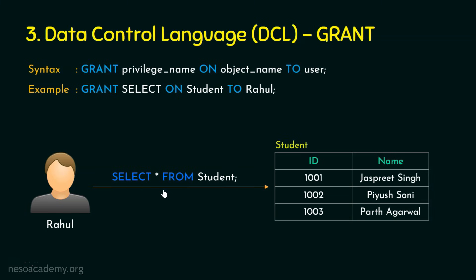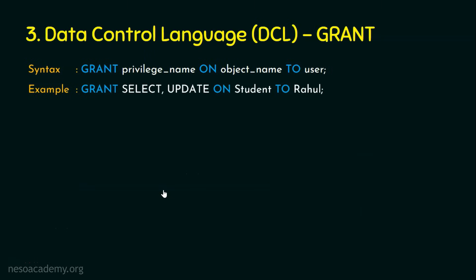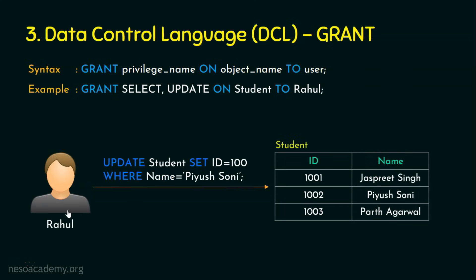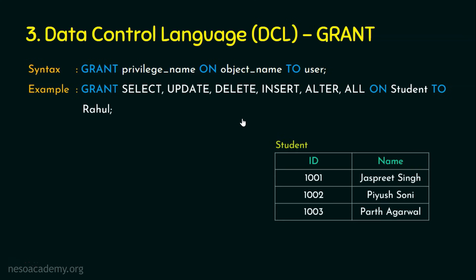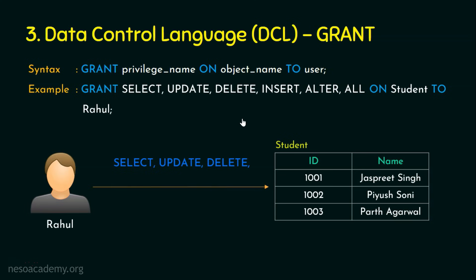To give more privileges to user Rahul, you can list privilege names separated by commas: GRANT SELECT, UPDATE ON student TO Rahul — meaning Rahul can update the table as well as select and retrieve data. You can extend this further: GRANT SELECT, UPDATE, DELETE, INSERT, ALTER, ALL ON student TO Rahul — giving Rahul almost all privileges on the student table.